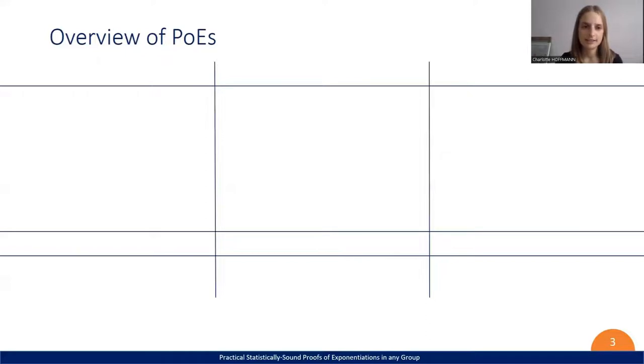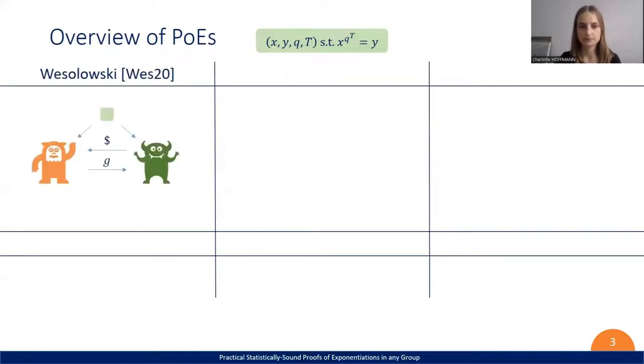Now let's look at the existing PoEs. Again, this is our instance x to the q to the t equals y. There's Wesolowski's protocol, which is quite short. The proof consists of only one group element. However, the soundness is only computational and it relies on the adaptive root assumption, which is a novel assumption and not that well understood.